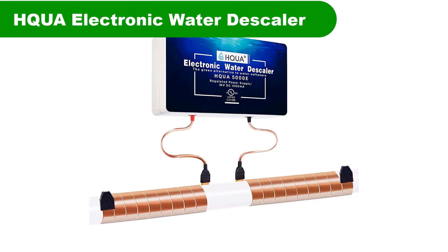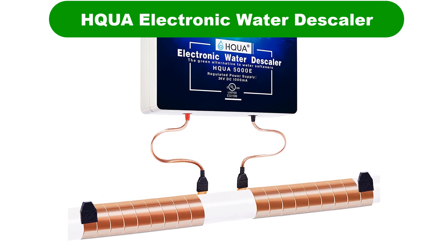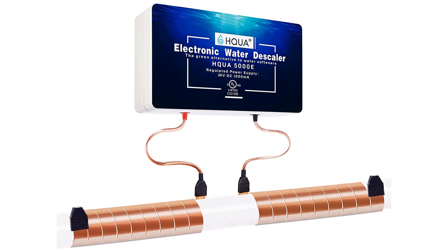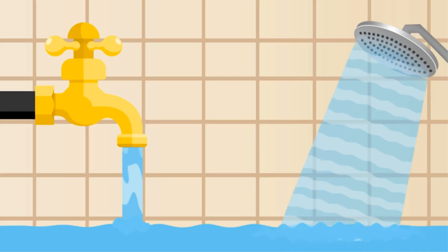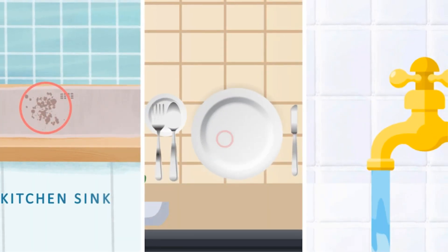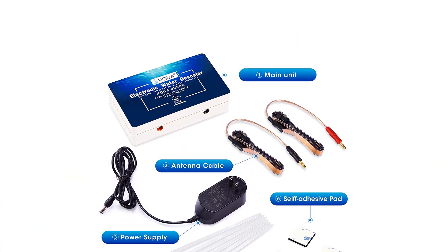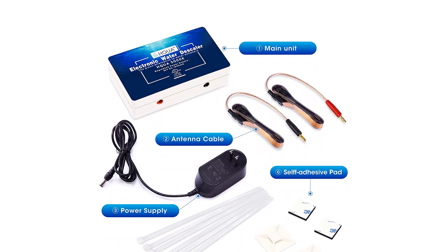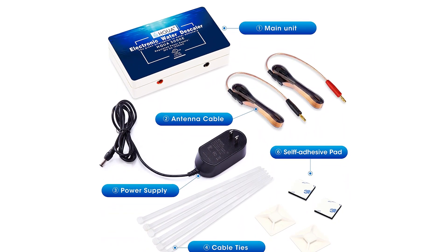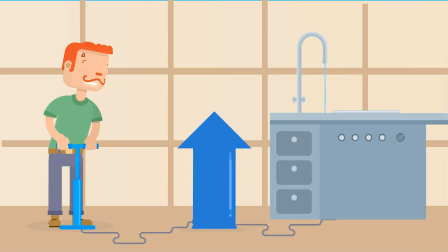Number 2. Our second best pick is HQA 5000E Electronic Water Descaler. The HQA 5000E Electronic Water Softener uses cutting-edge eco-friendly technology. It descales and dechlorinates water without the use of chemicals or salt. As a result of this feature, it is both environmentally friendly and healthy to consume. It also means that the water supply is not too sodium-laden.